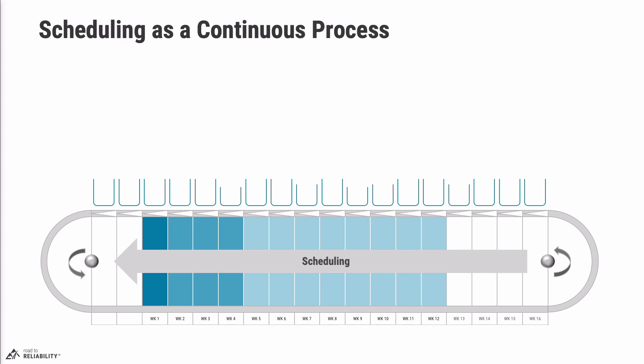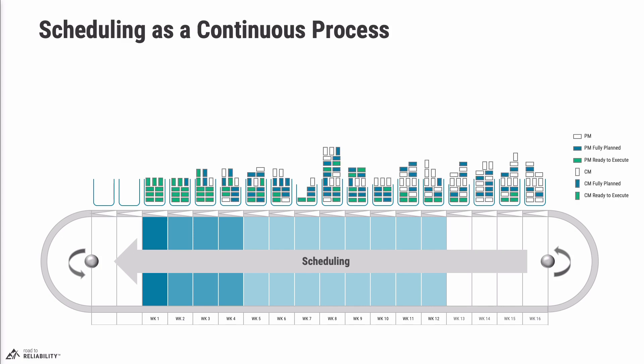As a scheduler, it is your job to fill these weekly buckets with maintenance work orders. The weekly buckets are now partially filled, overfilled, or perfectly filled with work orders. The horizontal blocks are PMs and the vertical blocks are CMs. White blocks represent work orders that still require planning, blue blocks are work that is fully planned, and green blocks are work that is ready to execute. Those statuses are maintained by the planner, but it's down to the scheduler to make sure the work is sitting in the right bucket — within any constraints set by the planner, such as a job that cannot start before week 8.